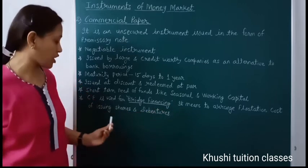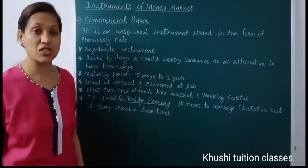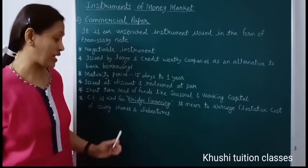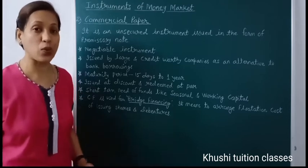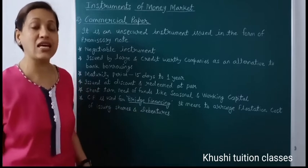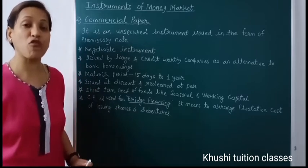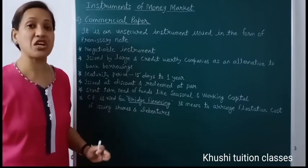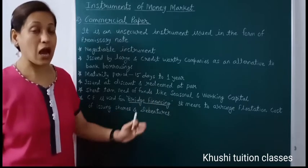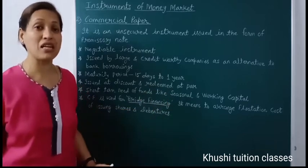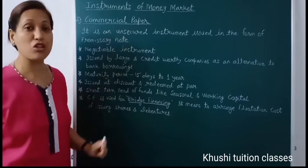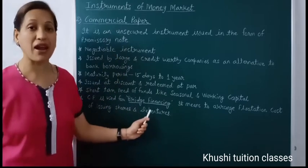Commercial paper is also used for bridge financing — meaning to arrange the flotation costs of issuing shares and debentures. When a company needs to issue shares or debentures for medium and long term funds, it first needs money for flotation costs such as brokerage, issuing of prospectus, listing of shares in the stock market, and registrar fees. To arrange these flotation costs, the company issues commercial paper. This is called bridge financing.